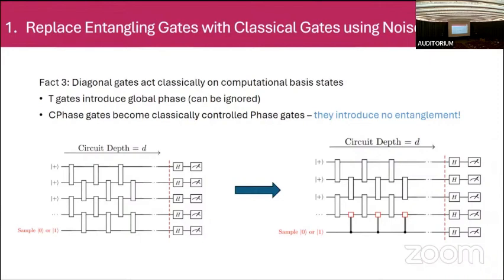Thanks for the nice talk. You mentioned noise wins against entanglement at every layer. If you went beyond constant depth, would you expect fragments of the circuit with some connectivity to remain of non-trivial size, or would everything eventually decouple? — If you keep increasing depth, at log n depth everything essentially becomes random, and your components become of size one.